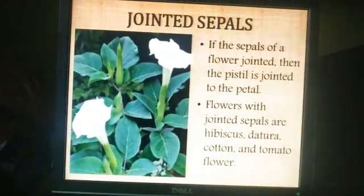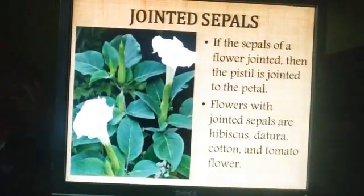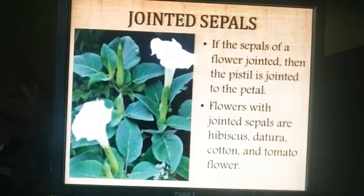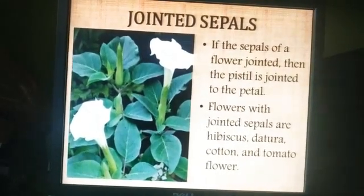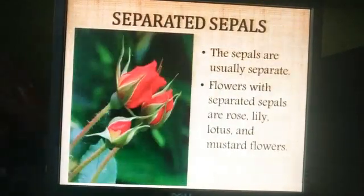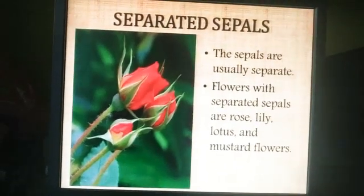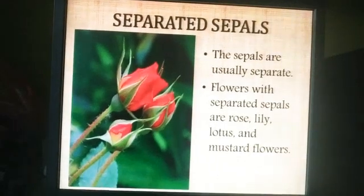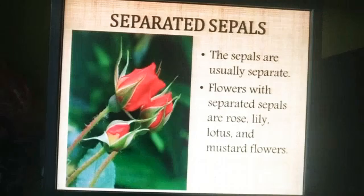Next is jointed sepals. If the sepals of a flower are jointed, then the flower has jointed sepals. Examples of flowers with jointed sepals are hibiscus, datura, cotton, and tomato flowers. The last type is separated sepals, where the sepals are usually separate. Examples of flowers with separated sepals are rose, lily, lotus, and mustard flowers.